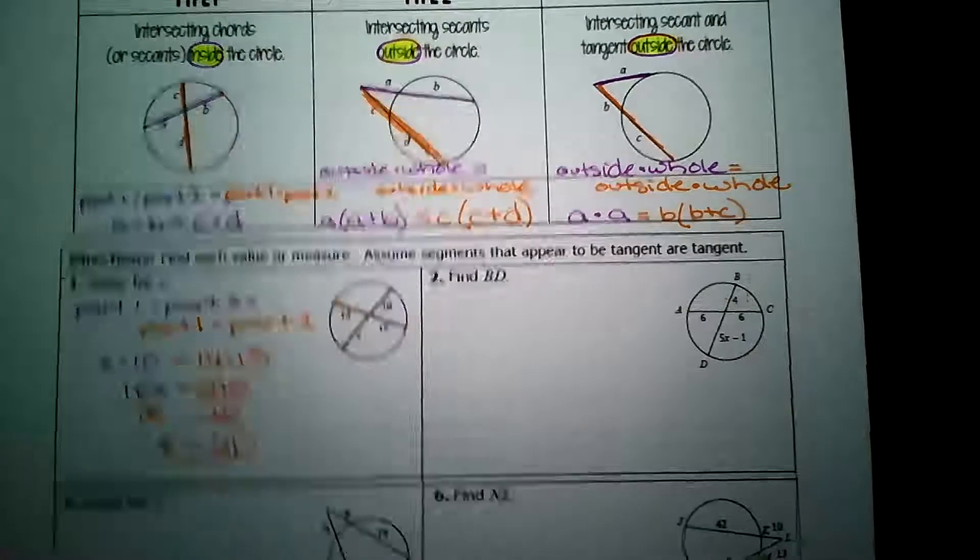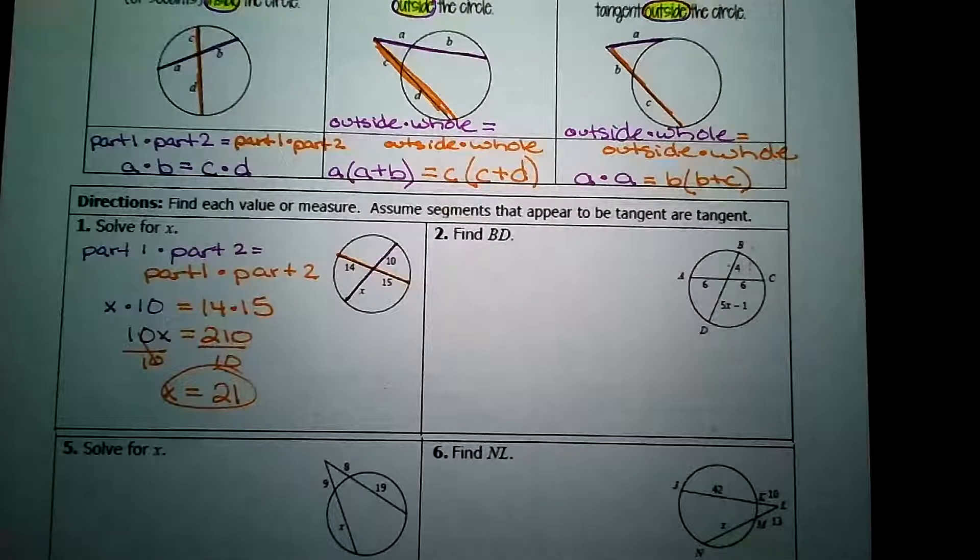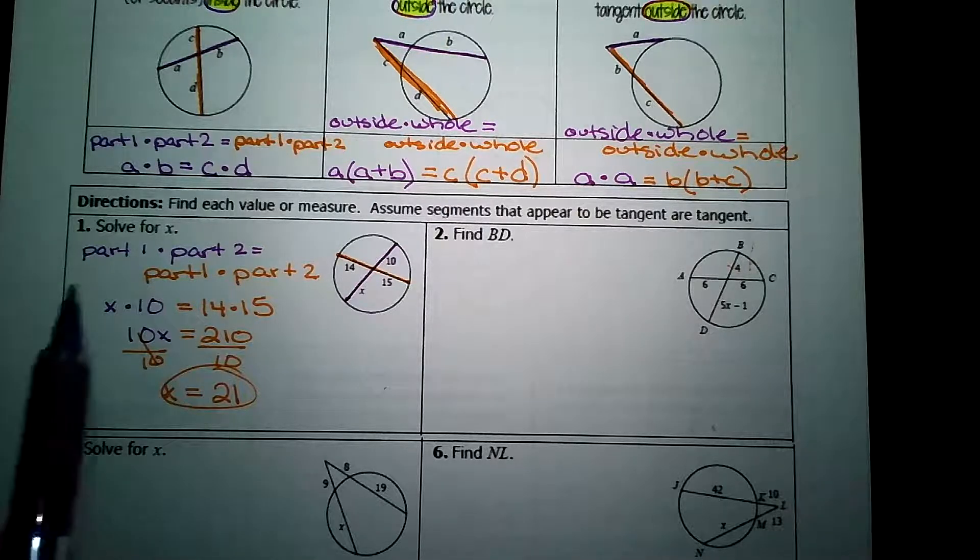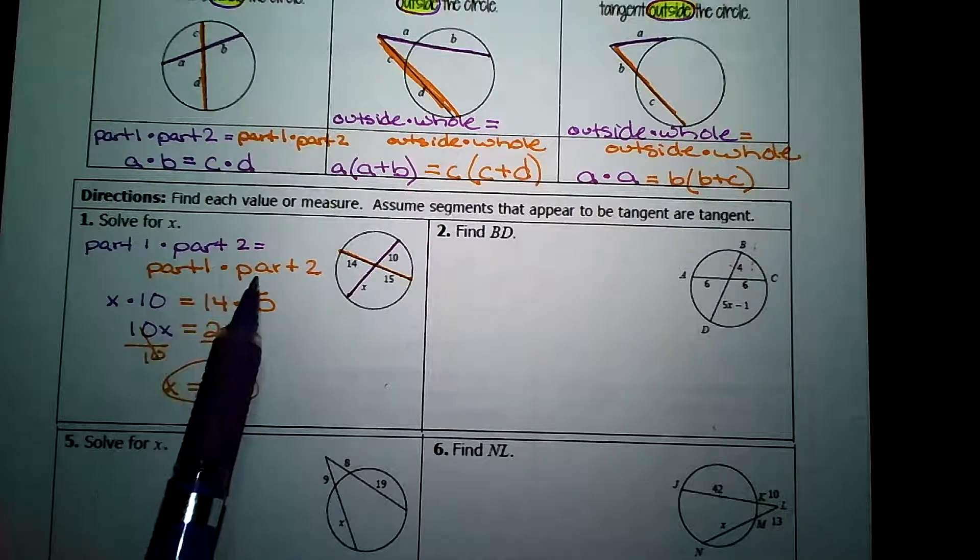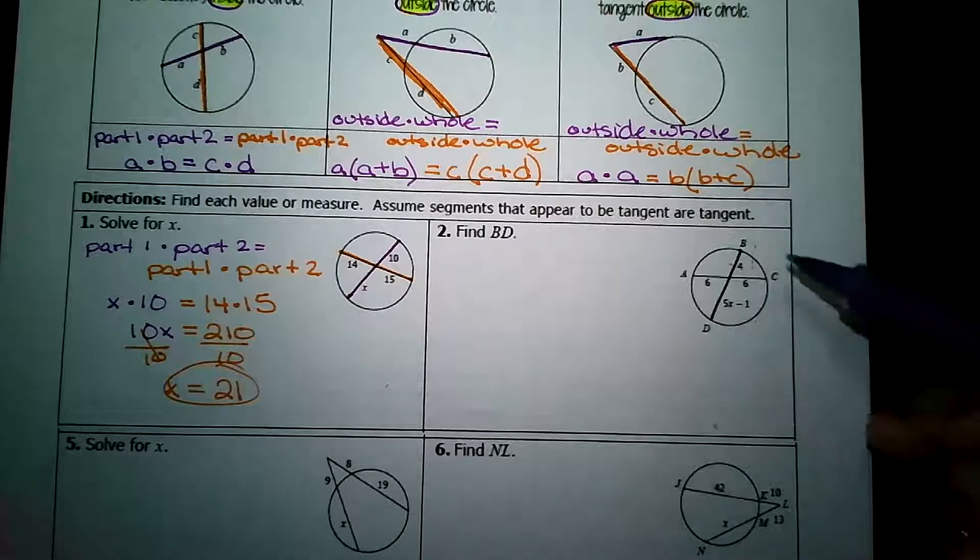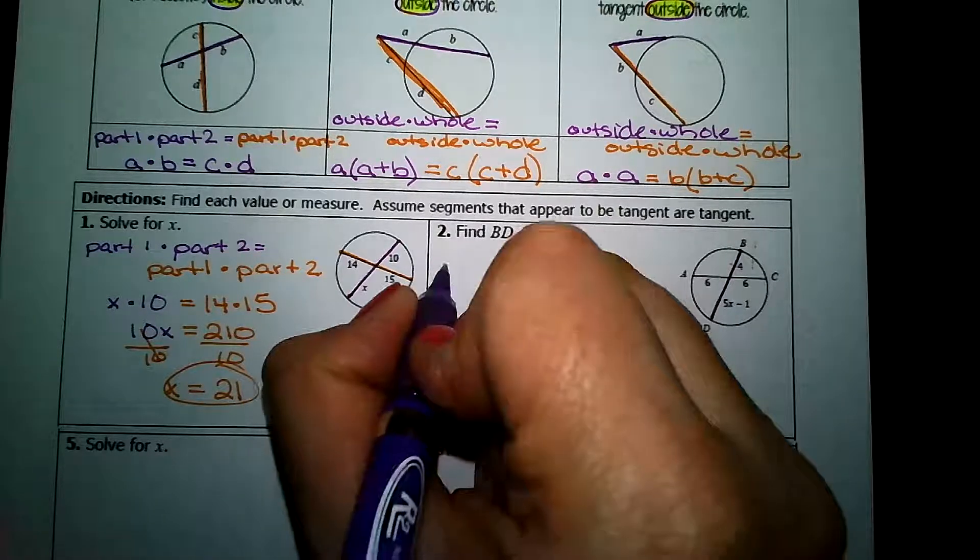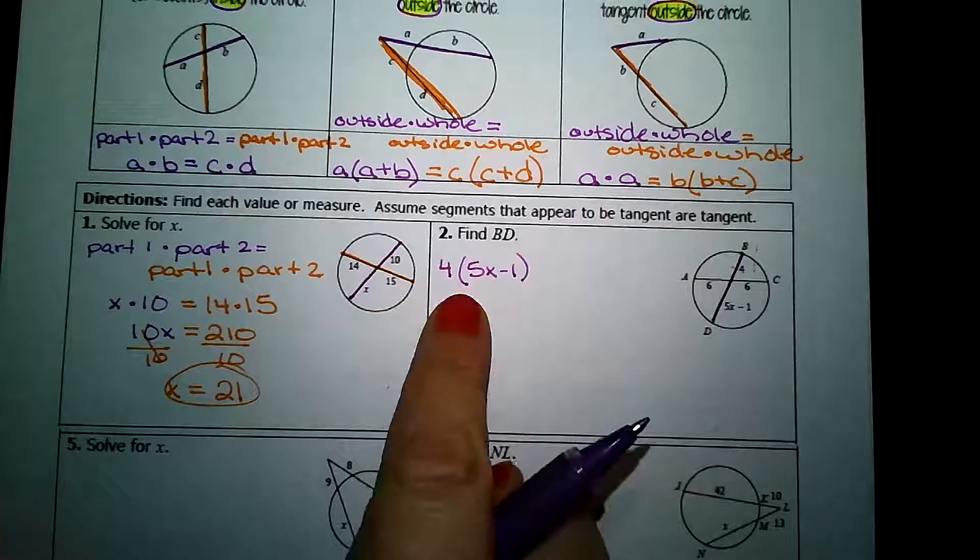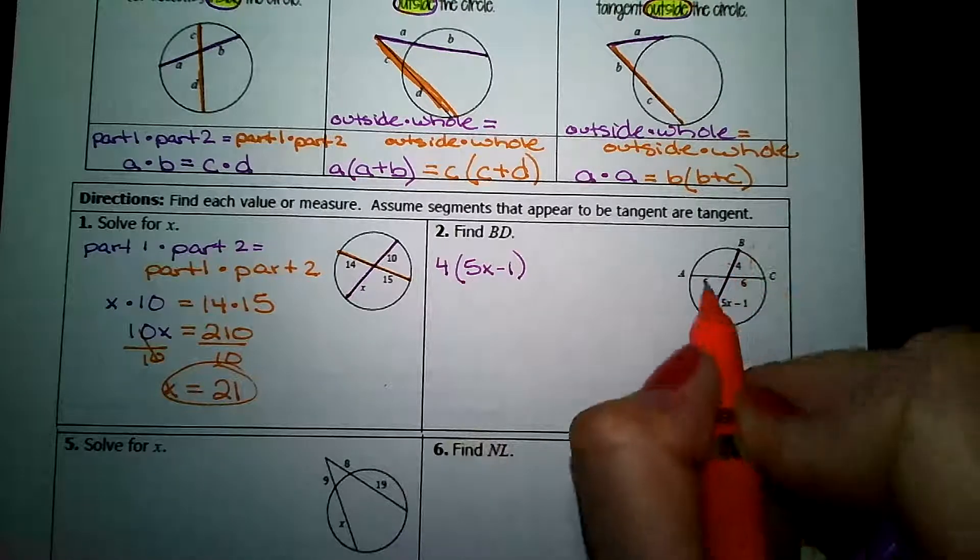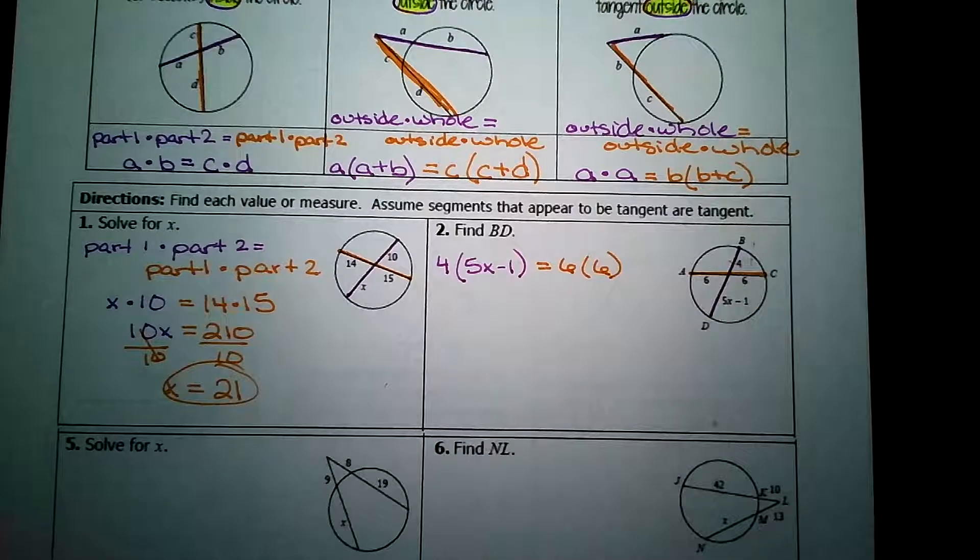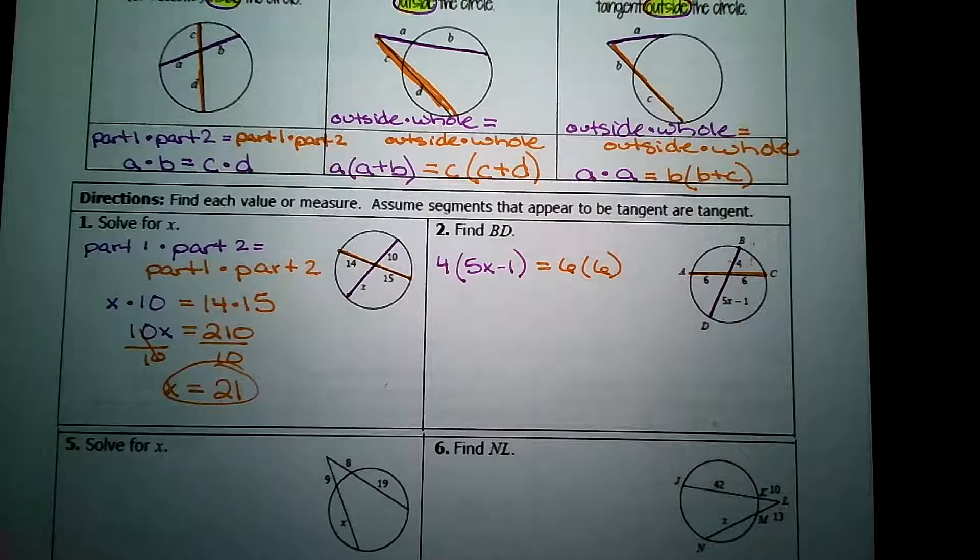What if the algebra gets a little more intense? Check out number two over here. We're going to follow the same pattern. This is an interior intersection. So we're doing part one times part two equals part one times part two. Let's start with the purple chord. The two parts are 4 and 5x minus one. So 4 times 5x minus one, and I've written it this way because I have to distribute, is equal to the orange chord 6 times 6, part one times part two. Okay, take a moment. Use your algebra skills and solve for x.